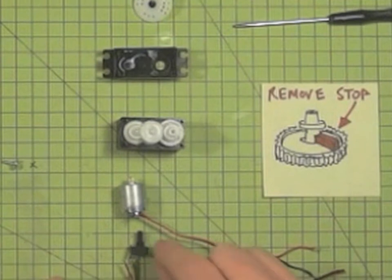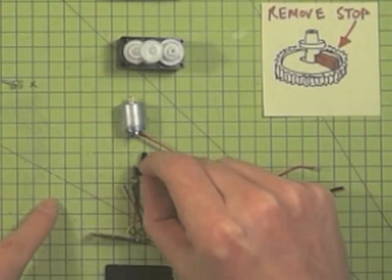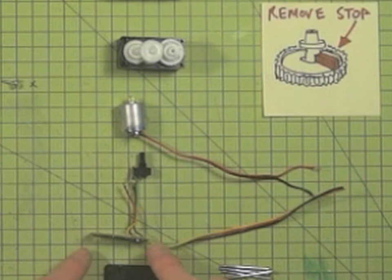Now the other thing to remove is this little thing here called a potentiometer, and you'll probably need to remove the circuit board as well.